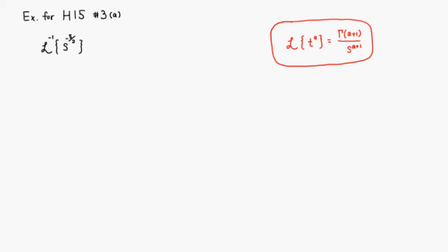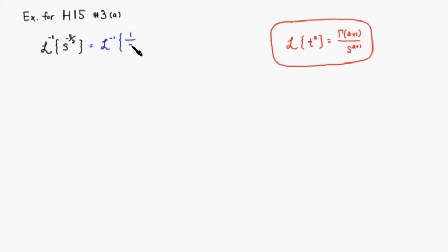Let's look at an example for Hallmark 15, problem number 3, part A. We want to find the inverse Laplace transform of s to the negative 5 halves power. First, I'm going to rewrite it — I don't like a negative power — so this is the inverse Laplace transform of 1 over s to the 5 halves on the bottom.